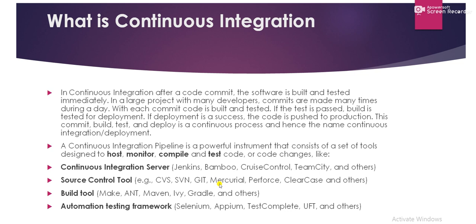Jenkins makes that process easy. As soon as the developer commits and pushes the code to the repository, the job set up in Jenkins is automatically triggered. It starts building, test cases run, and the code is deployed to the respective system. In a large project with many developers, commits are made many times during a day. With each commit, code is built and tested. If the test passes, the build is tested for deployment. If deployment is a success, the code is pushed to production.